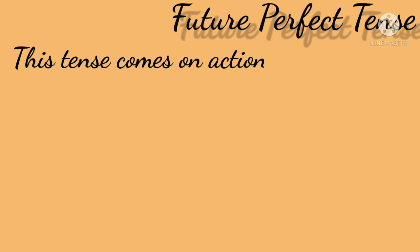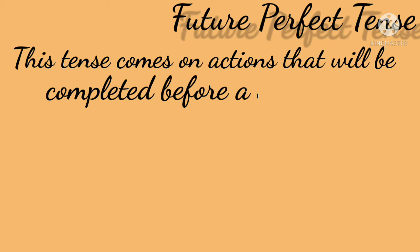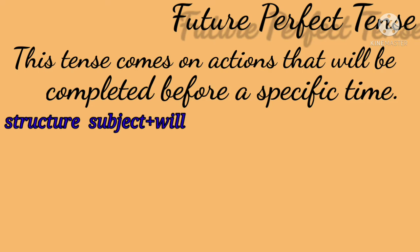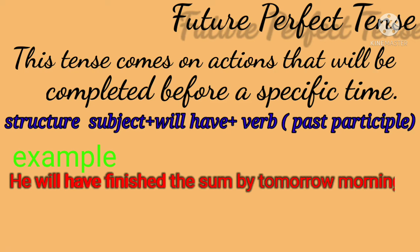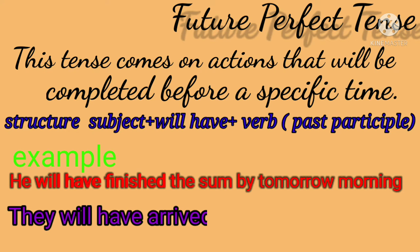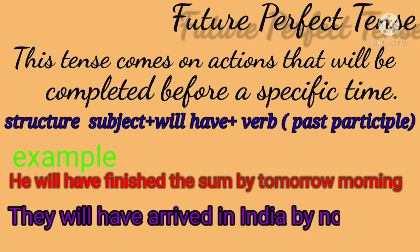Now, future perfect tense. This tense covers actions that will be completed before a specific time. Structure: Subject plus will have plus past participle. Example: He will have finished the song by tomorrow morning. They will have arrived in India by now.